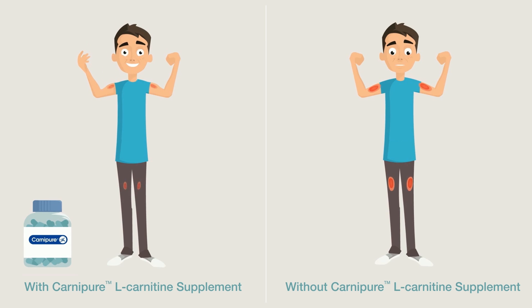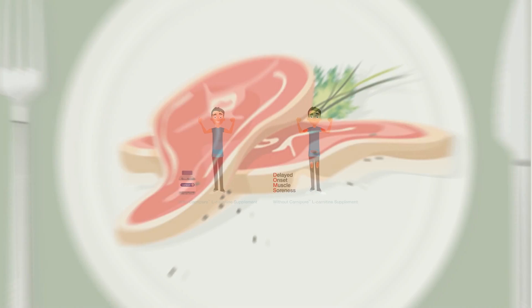Carnipur L-Carnitine has been shown to help prevent soreness after exercise, also known as DOMS, delayed-onset muscle soreness.